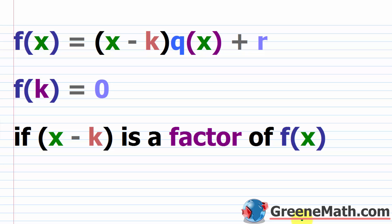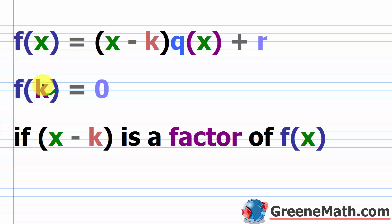Now let's talk about the factor theorem, which, if you understand the remainder theorem, is very simple. If f of x equals (x minus k) times q of x plus r, and we find that f of k equals 0, then there's no remainder — remainder is 0. That tells us that x minus k is a factor of f of x. We also know that if f of k equals 0, then k is a zero, or a root or solution — really the x-intercepts if k is a real number.